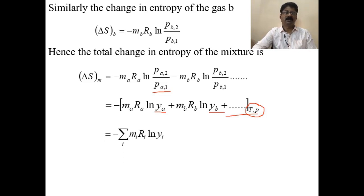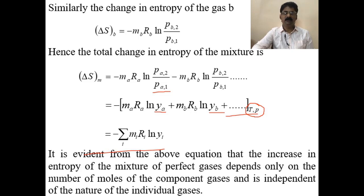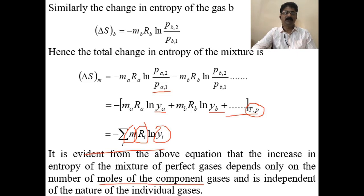The general expression for entropy change of the mixture is: Δsm = −Σ(mi · ri · ln(yi)), where the summation runs from i to n. It is clear from this equation that the increase in entropy of the mixture of perfect gases depends only on the number of moles and mole fractions of the component gases, and is independent of the nature of the individual gases.